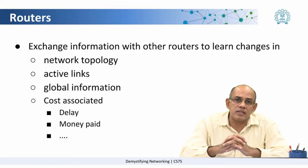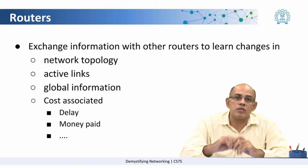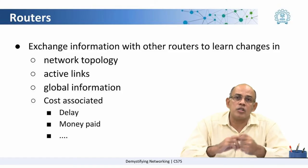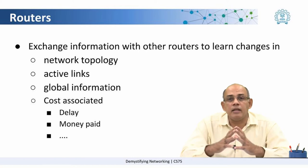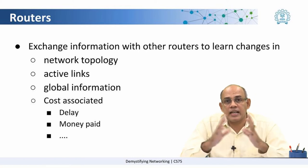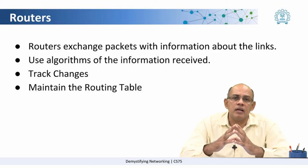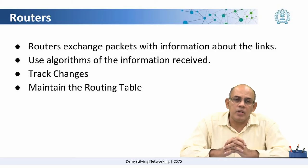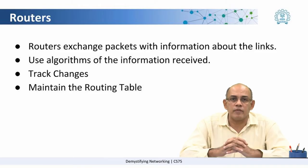Routers also have to exchange information which tells them which links are active. In more complex, real-life systems, there is also a cost associated with each link — the cost may be in terms of delay, or the money that has to be paid for sending packets on that link. Routers exchange packets on these links to create and maintain the routing table in the current state of the network.